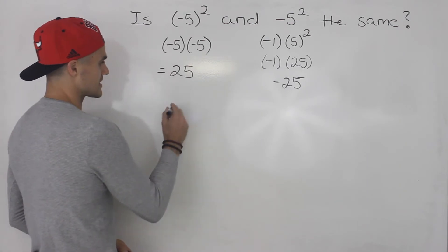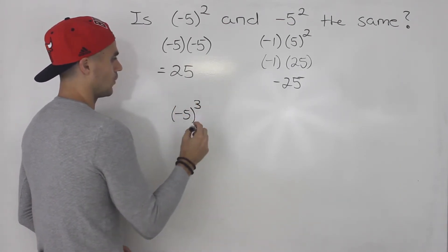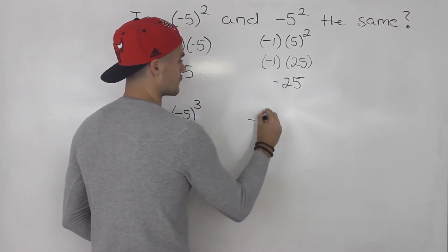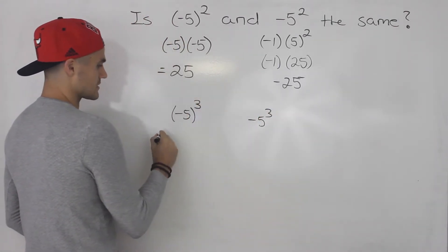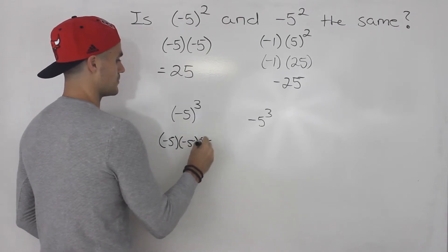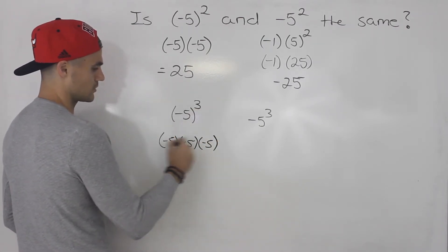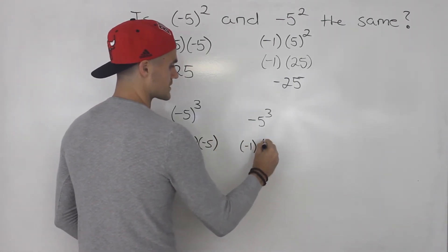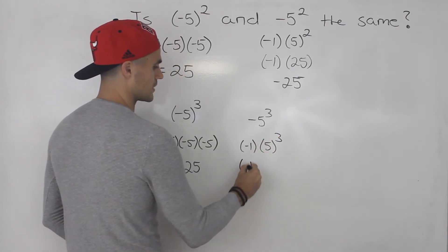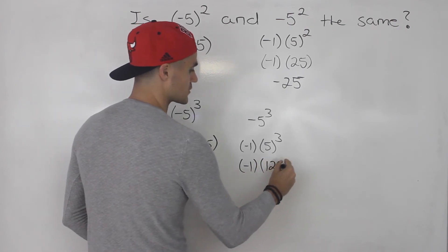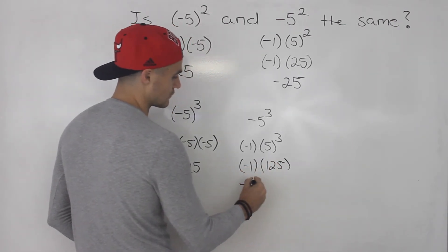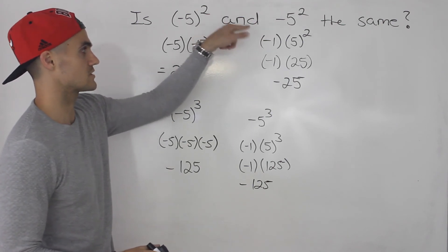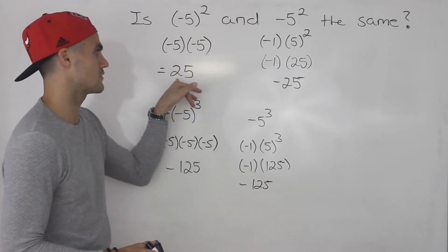Now these would be the same if the exponent was an odd exponent. For example, negative five to the power of three and negative five to the power of three — the process is still the same. The bracketed version is negative five times negative five times negative five, which gives negative 125. The non-bracketed version is negative one times five cubed, which is negative one times 125, also giving negative 125. So when the exponent is odd, they're the same. But when the exponent is even — like to the four — they'd be different: one negative, one positive. So just be careful with even exponents and that difference.